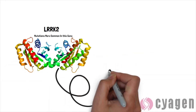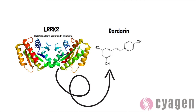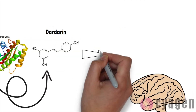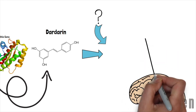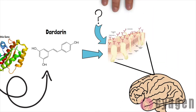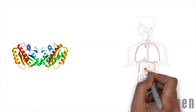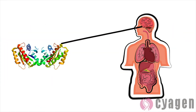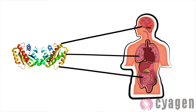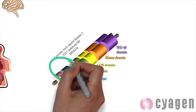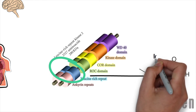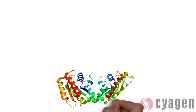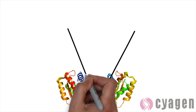The LRRK2 gene provides instructions for making a protein called Dardarin. It is thought that Dardarin may play a role in the biogenesis or regulation of membranous intracellular structures in the brain. The LRRK2 gene is active in the brain and other tissues throughout the body. One segment of the Dardarin protein is called a leucine-rich region because it contains a large amount of a protein building block known as leucine.